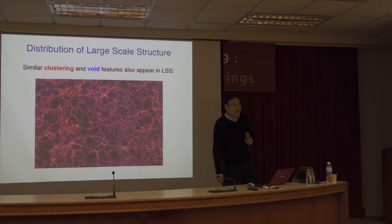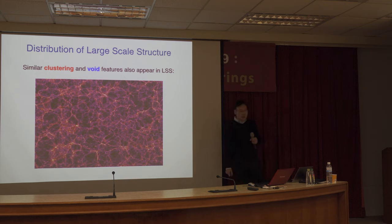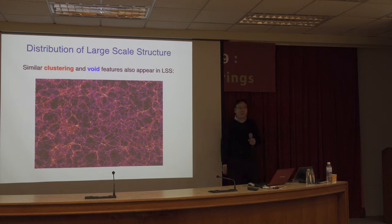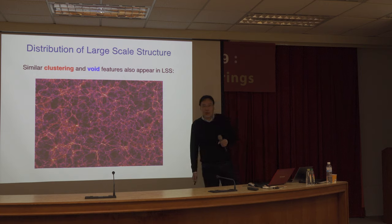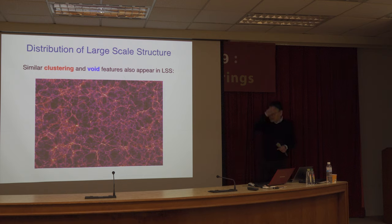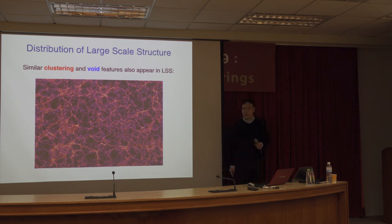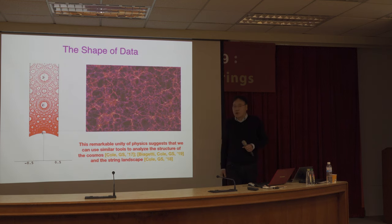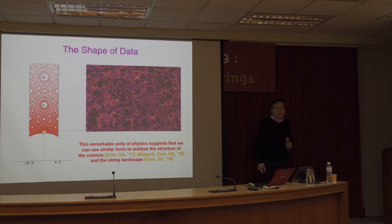Similar clustering and void-like features also appear in the large-scale structure of our universe, where we look at density distributions of galaxies and clusters of galaxies. Besides density distributions, we are also interested in properties like luminosity or color of galaxies, or in the case of the CMB, the polarization of CMB photons. These additional features enlarge the data space, raising the question: how do we recognize patterns in a higher-dimensional data space when the dimension is large and the data is complex?